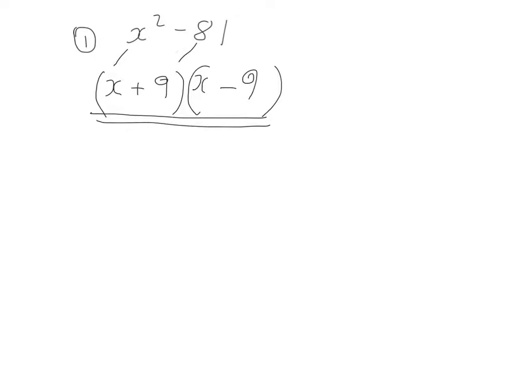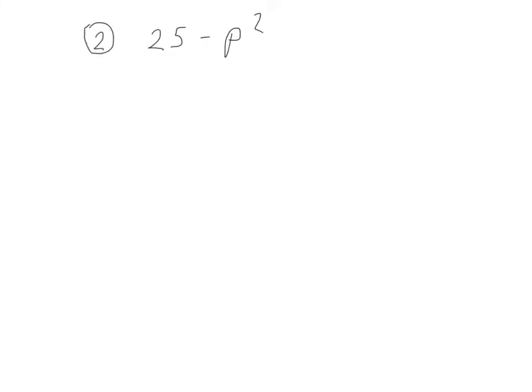You could write it as x minus 9, x plus 9 — that would be fine as well. Example 2: factorise 25 minus p squared.